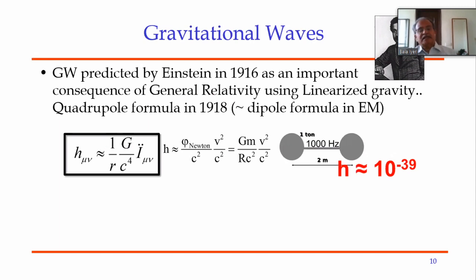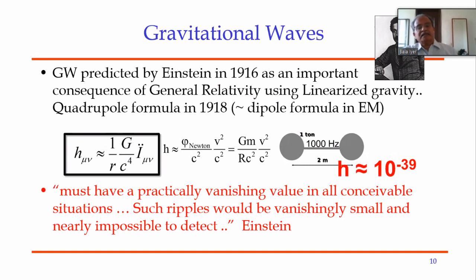The gravitational field of a gravitational wave falls off as 1/r, and is given by the second time derivative of the quadrupole moment. Applied to a physical system on Earth — a dumbbell of a ton each, separated by a couple of meters, rotating at about a kilohertz — the gravitational wave perturbation is of order 10^{-39}. Einstein, who worked in the patent office, realized this must have practically vanishing value in all conceivable situations. Such ripples would be vanishingly small and nearly impossible to detect.